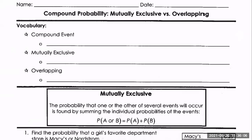Compound probability is basically when you combine two or more events — like the probability that this or that occurs. There are going to be two types; we're going to spend most of the class talking about one type, then start on the other type and continue into Friday.